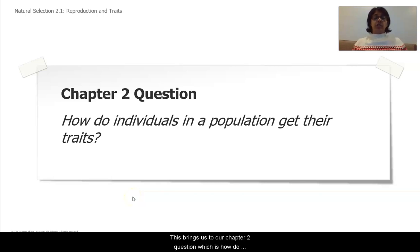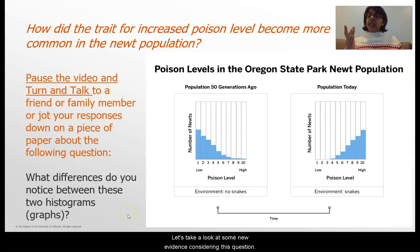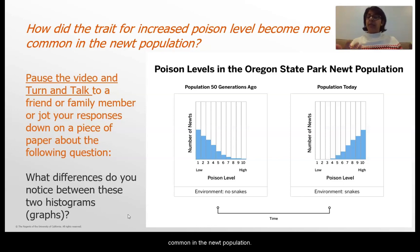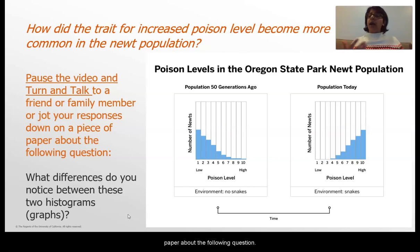This brings us to our chapter 2 question: how do individuals in a population get their traits? Let's take a look at some new evidence considering this question. How did the trait for increased poison level become more common in the new population? Pause the video and turn and talk to a friend or family member, or jot down your responses on a piece of paper about the following question.